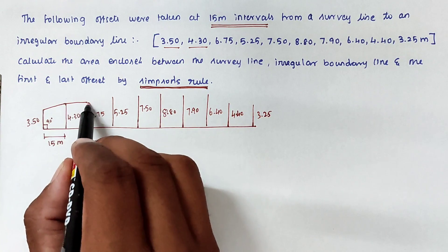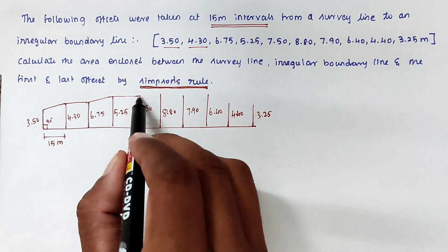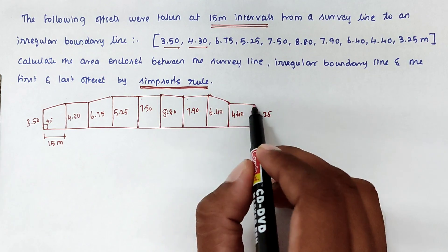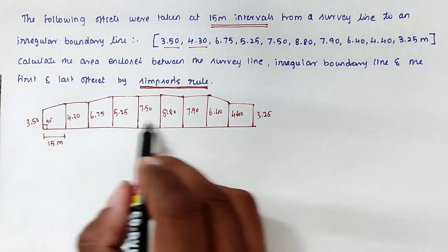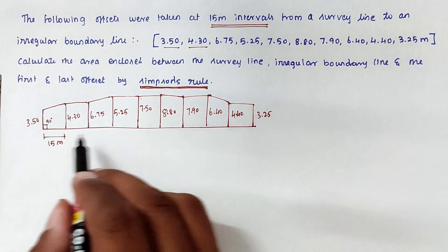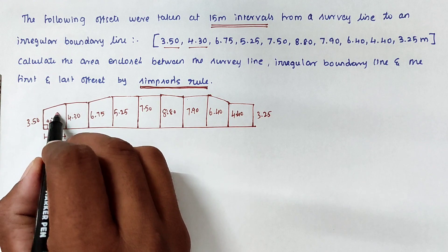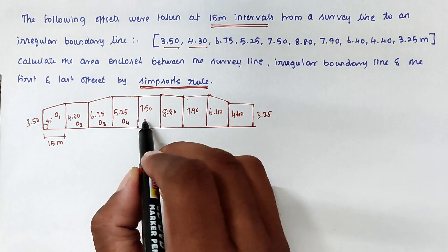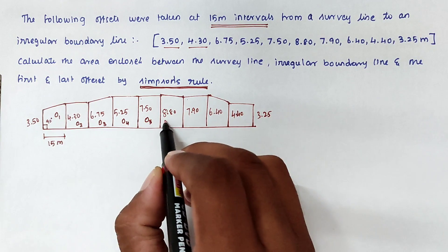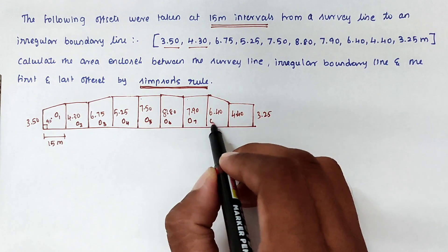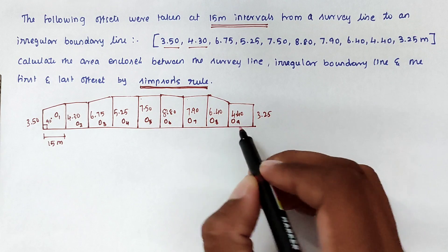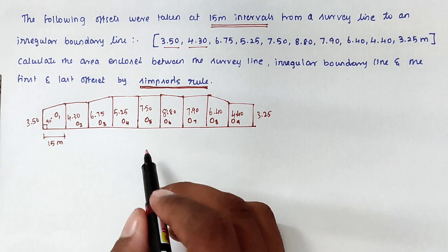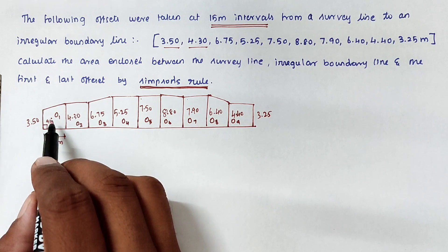Now we can connect all those points — this is the irregular area, and we have to find the area. We label them as ordinates 1 through 9. If Simpson's rule is applied, the number of ordinates must be odd. There are 9 ordinates, so we can apply Simpson's rule to ordinates 1 to 9.